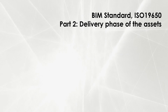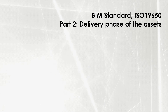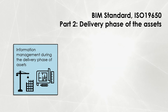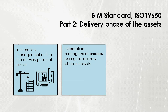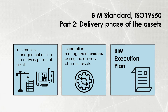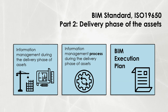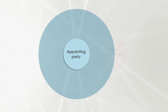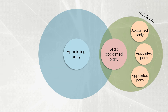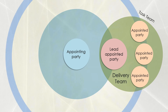BIM standard ISO 19650 Part 2 is focused on the delivery phase of the assets. The most important sections of this document discuss information management during the delivery phase of assets, the information management process during the delivery phase, and the BIM execution plan. The BIM execution plan is a contractual document prepared to address information requirements and project information and documentation milestones. ISO 19650 Part 2 also presents a conceptual model of interfaces between parties and teams for the purpose of information management.